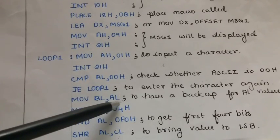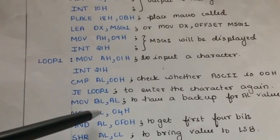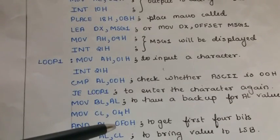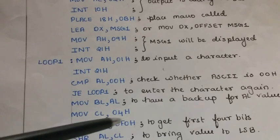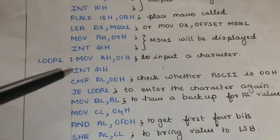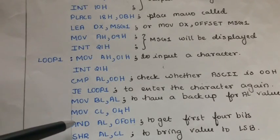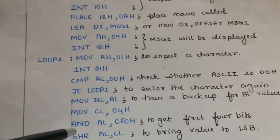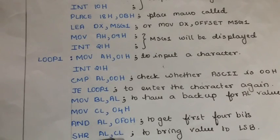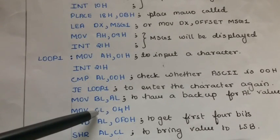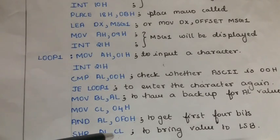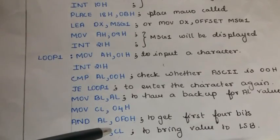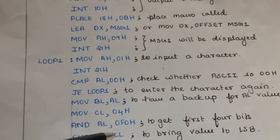Move cl,04h and al,f0h shr al,cl. By doing so, we will get the first digit of the ASCII value along with the 0 to its right. That is why we have to shift the value in al by 4 bits to the right. Since we have to shift it by 4 bits, initially, I have put 4 into the cl register. So, after the execution of these three instructions, we will get the first digit from the ASCII value. That is in our example, it is 3.